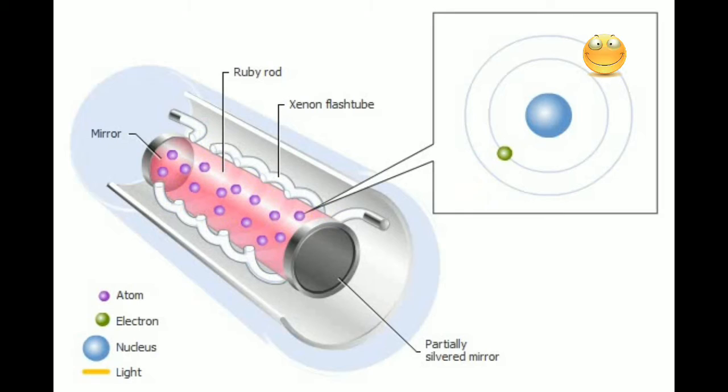Intense light from the flash tube excites electrons in the ruby's chromium atoms. The electrons are raised to higher energy levels.